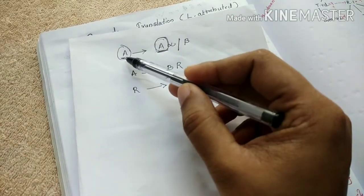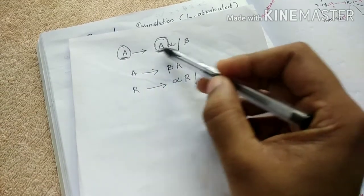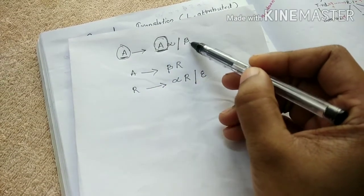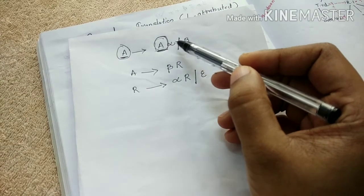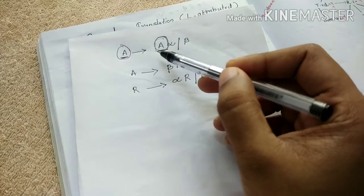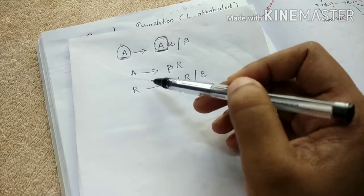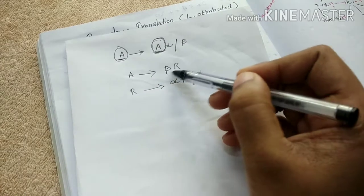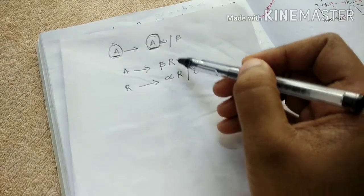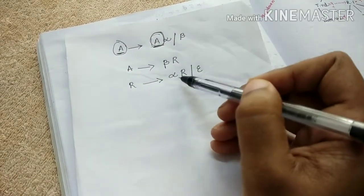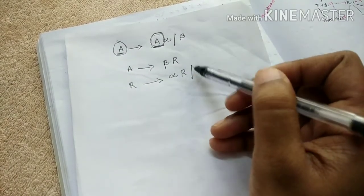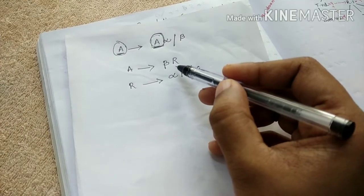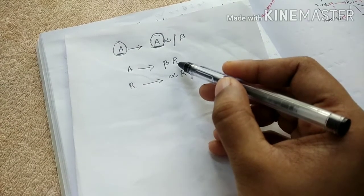If your grammar is of the form A equals A-alpha or beta, then after eliminating left recursion it will be: A equals beta-R, R equals alpha-R or epsilon. Here we introduce a new symbol R.